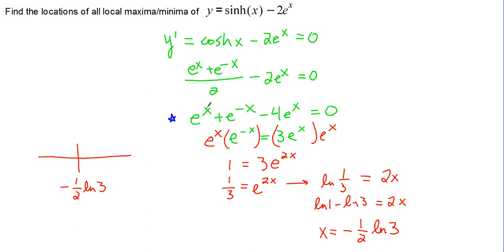So e to the 0 is 1, plus e to the 0, which is also 1, minus 4e to the 0, which is minus 4, gives us a negative 2. So on this side, we have a negative value, which means our function is decreasing.